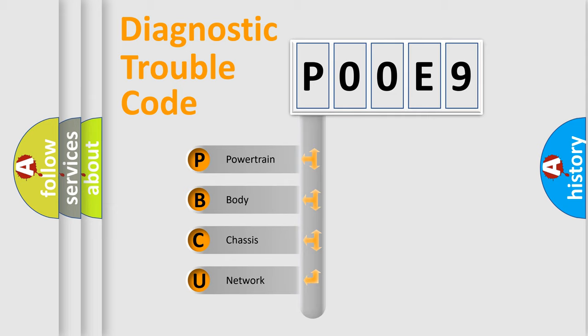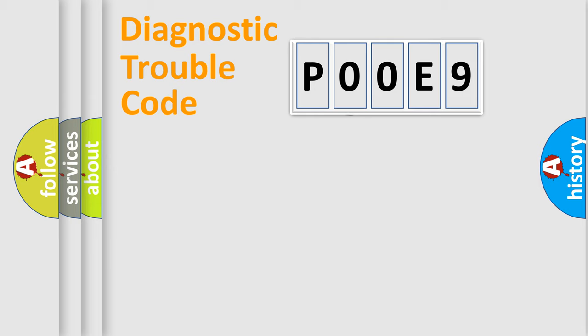We divide the electric system of automobiles into four basic units: Powertrain, Body, Chassis, and Network. This distribution is defined in the first character code.